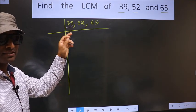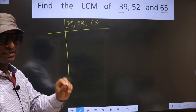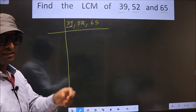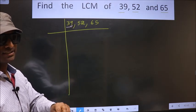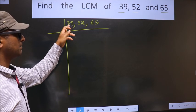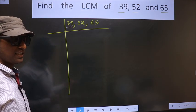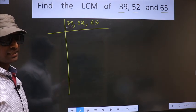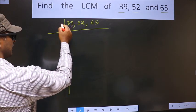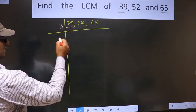Next prime number is 3. To check divisibility by 3, we should add the digits. That is 3 plus 9, we get 12. Is 12 divisible by 3? Yes. So this number is also divisible by 3 and I take 3 here.